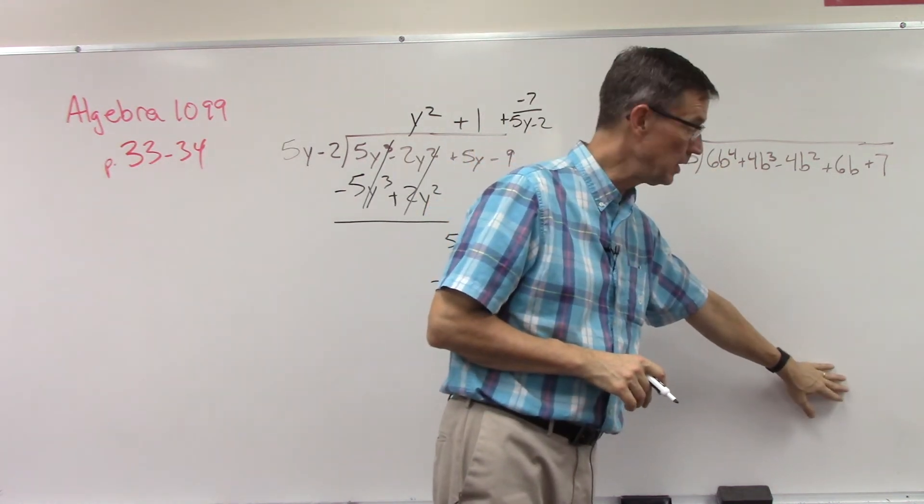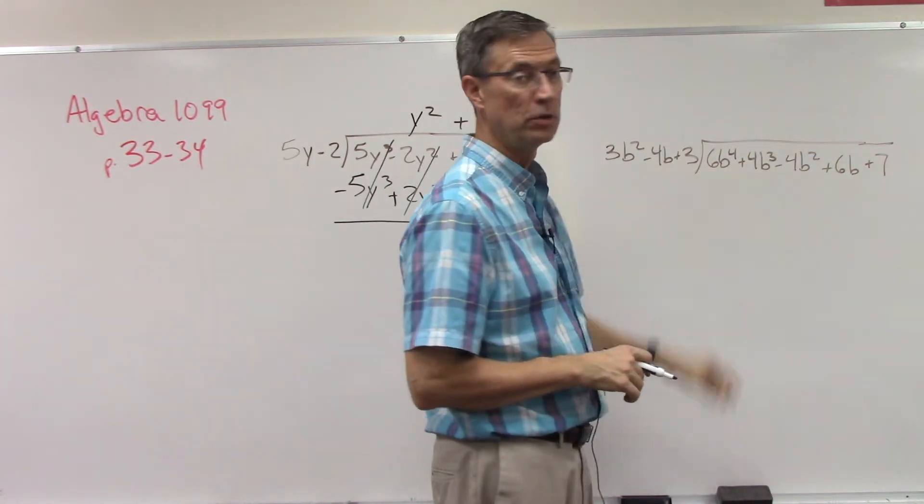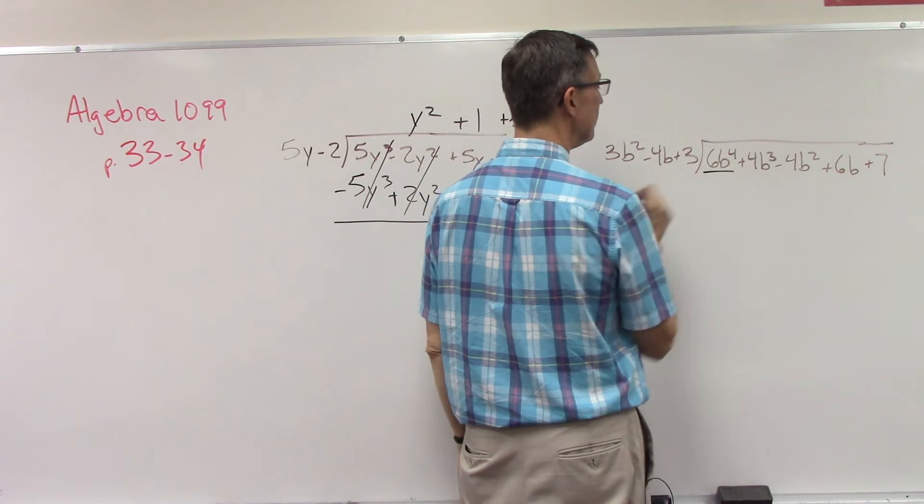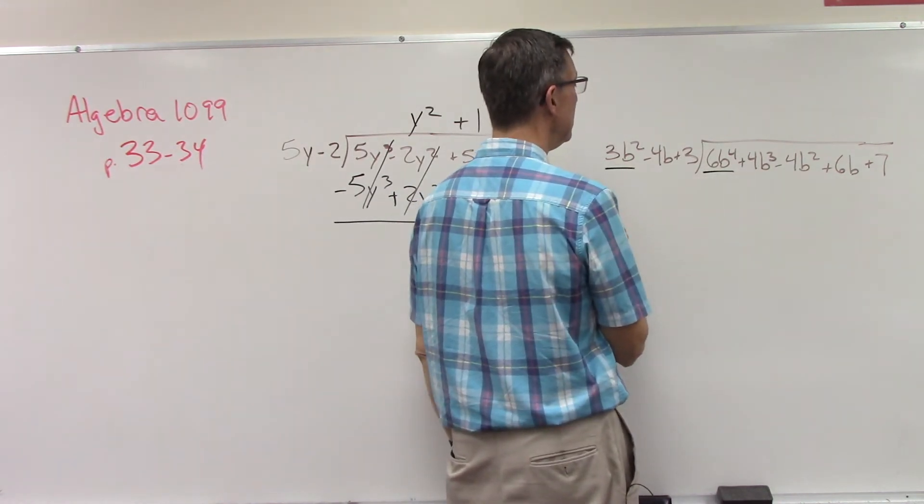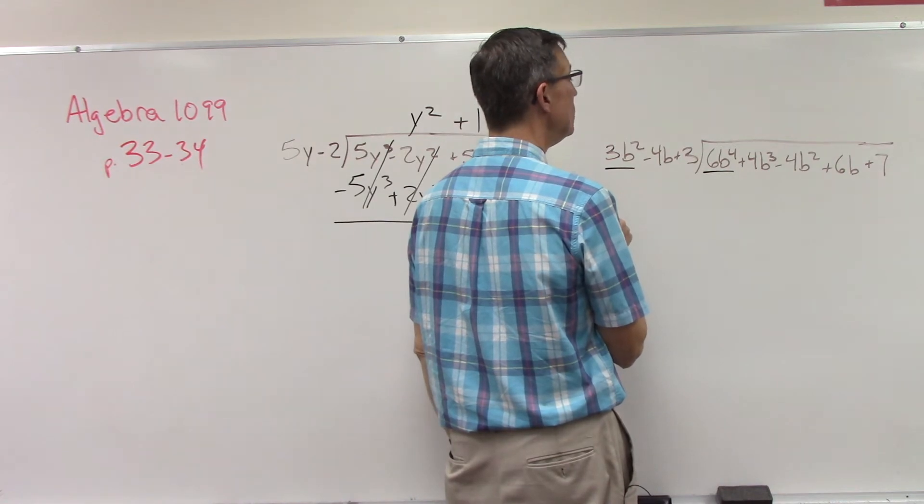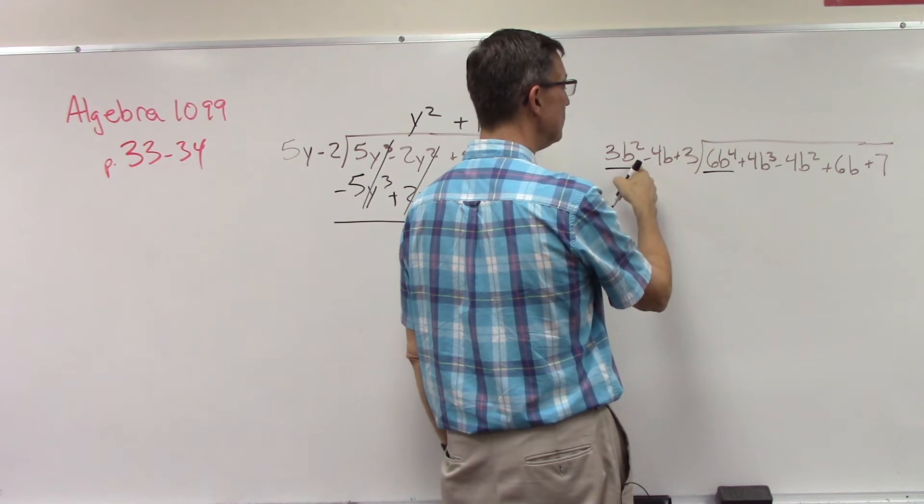You should have a remainder at the end, and so you'll write that over the divisor when you're done. Let's look at just the first term: 6b to the fourth divided by 3b squared. That would be 2. 6 by 3 is 2, b to the fourth divided by b squared, you subtract the exponents.